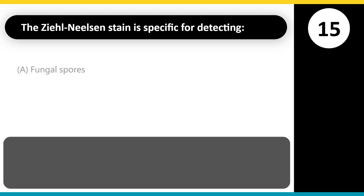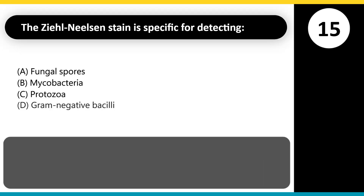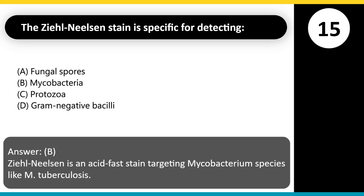The Ziehl-Neelsen stain is specific for detecting: A. Fungal spores. B. Mycobacteria. C. Protozoa. D. Gram-negative bacilli. Answer: B. Ziehl-Neelsen is an acid-fast stain targeting mycobacterium species like M. tuberculosis.